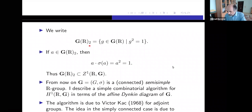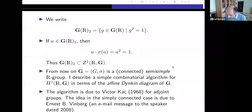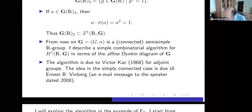We denote by G(R)₂ the set of real elements in G(R) such that g² = 1. If A is in G(R)₂, then A·sigma(A) = A² = 1, because A is real. So G(R)₂ is contained in the set of cocycles. From now on, our G is a connected semisimple R-group. I describe a simple combinatorial algorithm which permits us to compute the Galois cohomology set H¹(R, G) in terms of the affine Dynkin diagram.